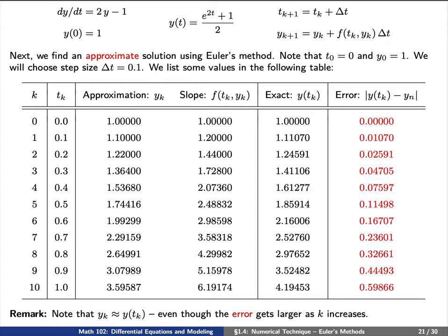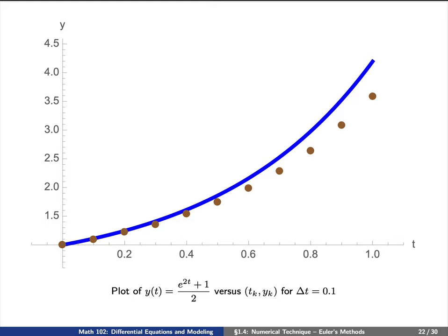That is, even though y sub k is very close to y of t of k, the error here gets larger and larger as k increases.